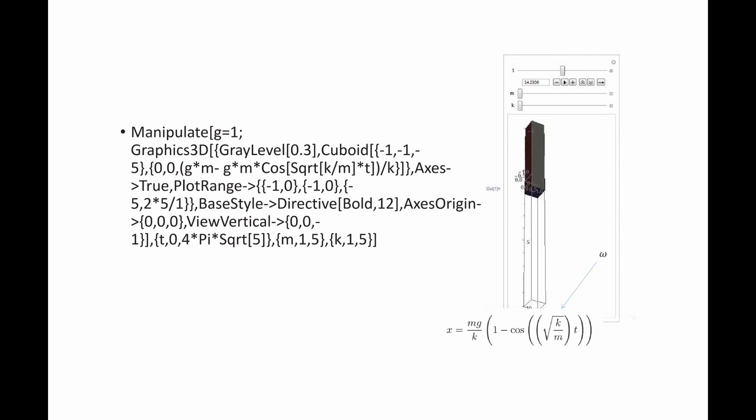This constant √(k/m) is called omega, the natural frequency of the system. If you copy and paste the provided code into Mathematica, you can see the effect of changing the stiffness or the mass of the spring on the oscillations of the mass-spring system, and this effect will be demonstrated during the lecture.